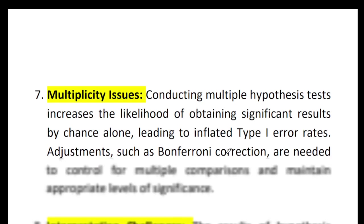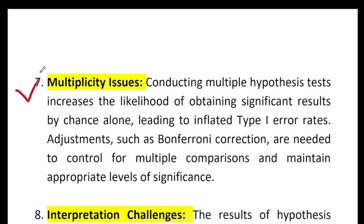The next limitation is multiplicity issues. Conducting multiple hypothesis tests increases the likelihood of obtaining significant results by chance alone, leading to inflated type one error rates. Adjustments such as Bonferroni correction are needed to control for multiple comparisons and maintain appropriate levels of significance.